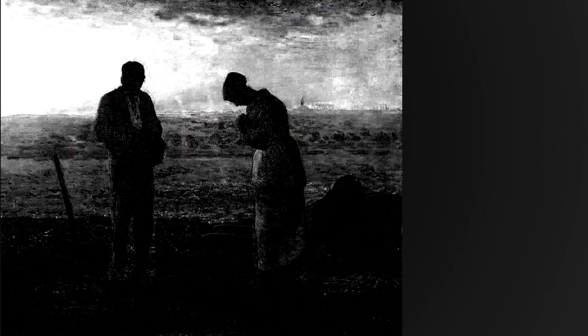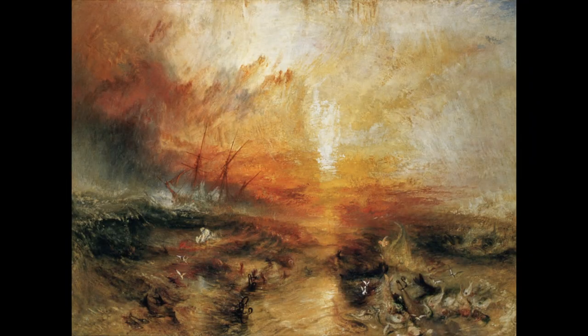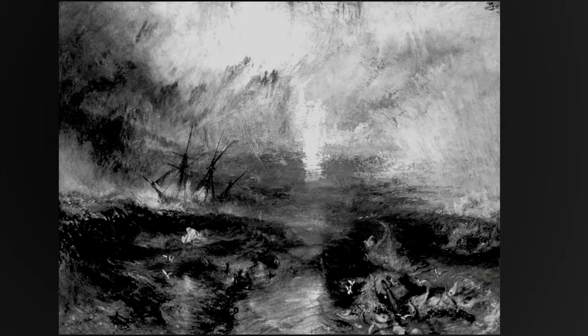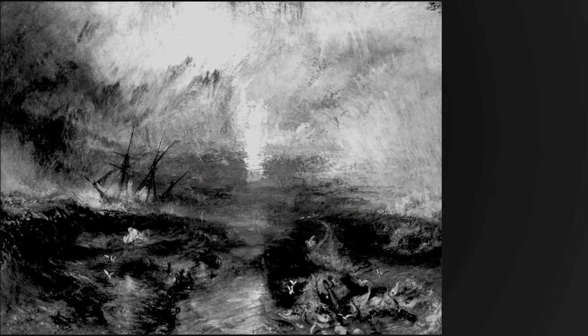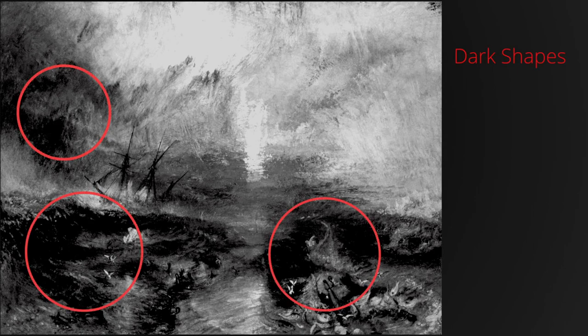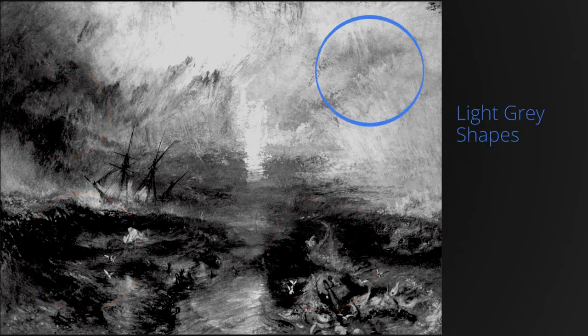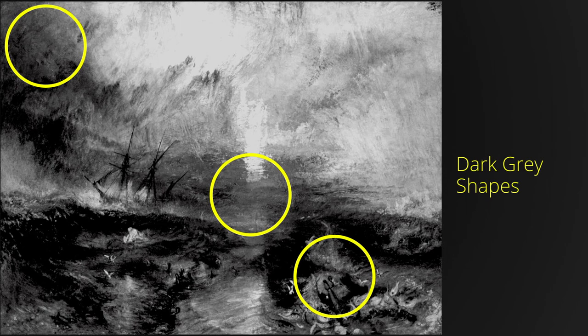Let's look at another example — in this case, a more complicated painting by Turner. Yet if we look at this again in black and white, we can find the same four values: here's the light shape, the dark shapes, our light gray, and our dark gray.